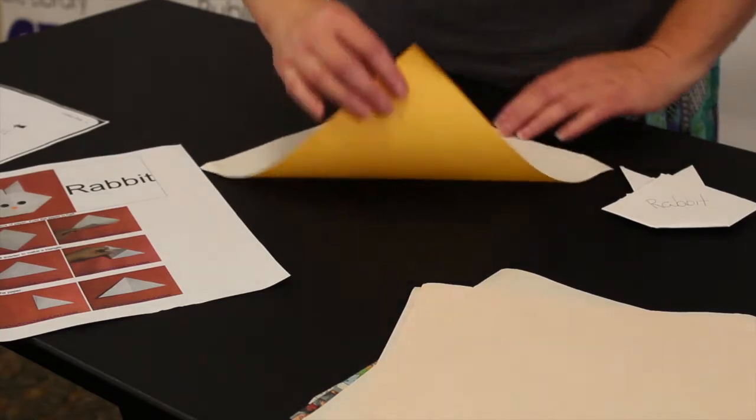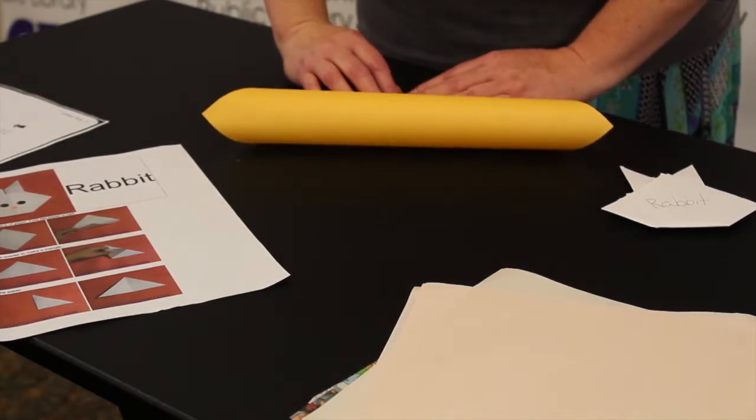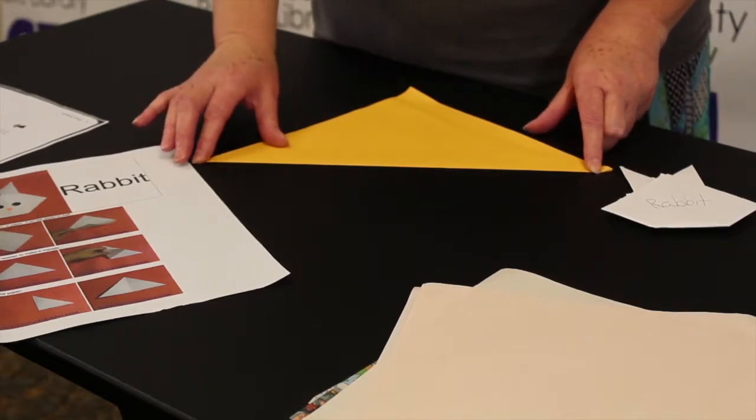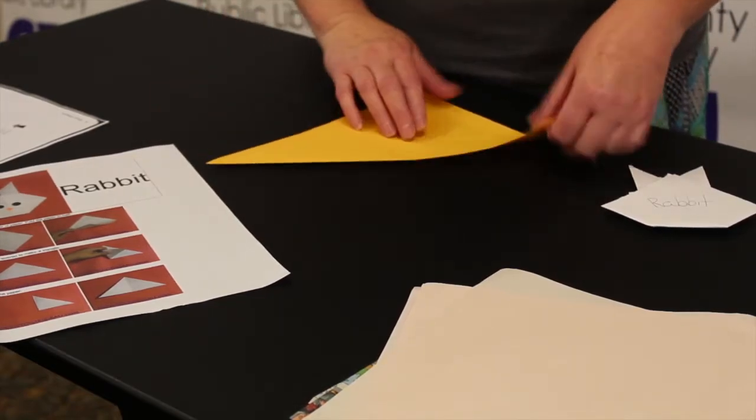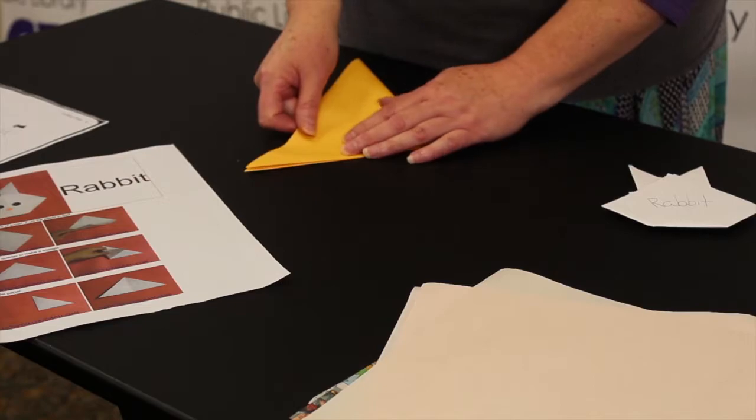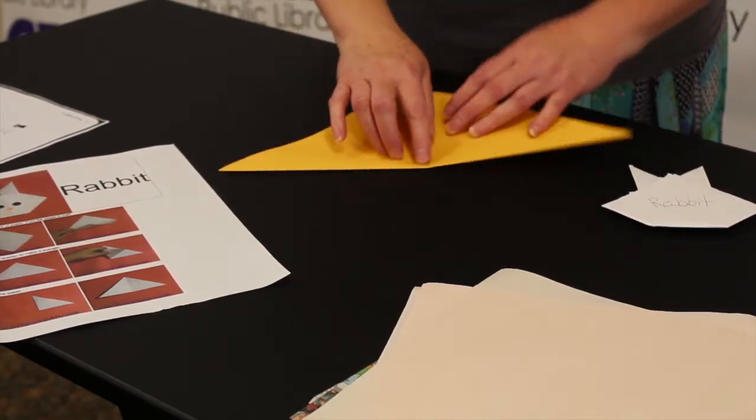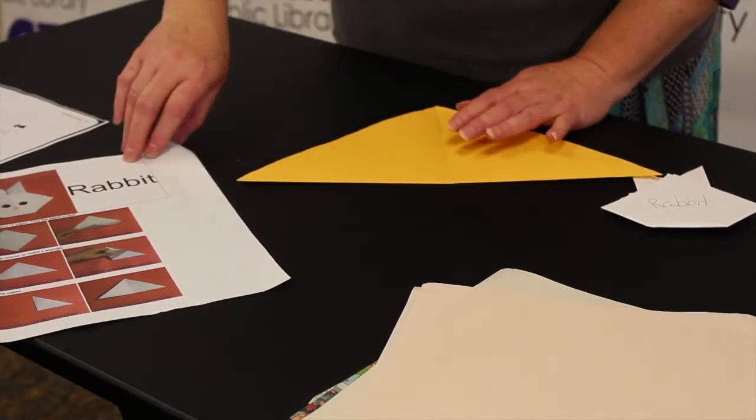We're going to fold the paper. Crease it, and then we fold our triangle in half again. Crease it, and it says to unfold it because we have our guideline, like the other shapes that we fold in.